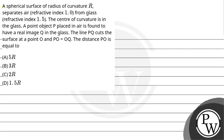Let's read this question. A spherical surface of radius of curvature R separates air, refractive index 1.0, from glass, refractive index 1.5. The center of curvature is in the glass. A point object P placed in air is found to have a real image Q in the glass. The line PQ cuts the surface at point O, and PO equals OQ. The distance PO is equal to: Option A: 5R, Option B: 3R, Option C: 2R, Option D: 1.5R.